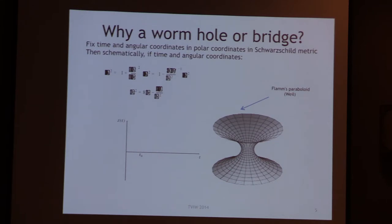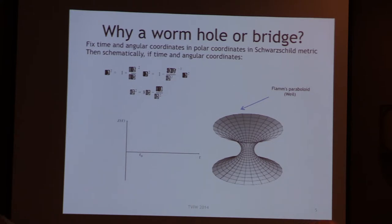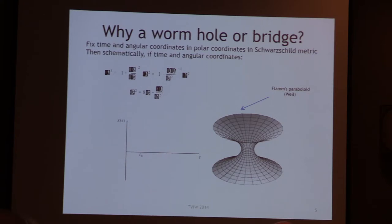From knowing the Schwarzschild solution, strangely enough a guy named Ludwig Pflam — also in 1916 — noticed that if you fix time and the angular coordinates and solve for what kind of surface you get, it turns out to be a paraboloid. And if you rotate that around the z-axis, you get a hyperboloid of one sheet. This is the thing that Einstein was interested in.